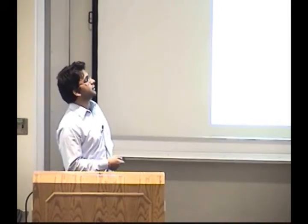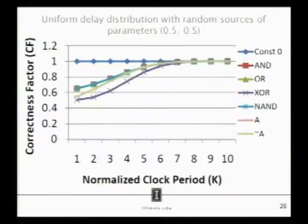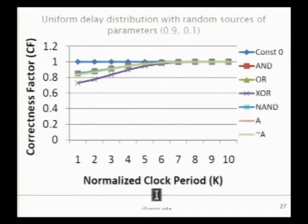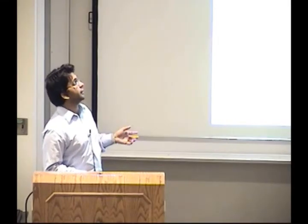What we did was we used the PRISM model checking tool. We modeled the stochastic devices as Markov chains and we asked what is the probability of getting the correct output in the long run. And that is how we calculated the correctness factors for various circuits. This is a particular example of the correctness factor and this increase is with respect to the latching time. And we can also see that for some of the functions like AND and OR, the correctness factor is significantly more than other inputs like XOR and NAND. And these are similar observations with different parameters. We tweak the parameters of the Markov chain and we get different results.